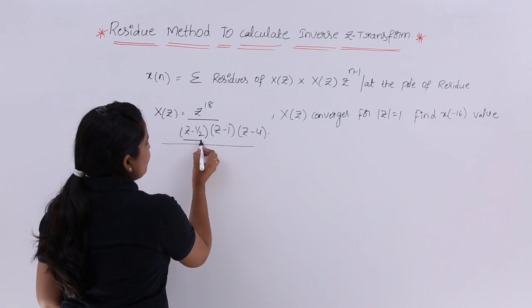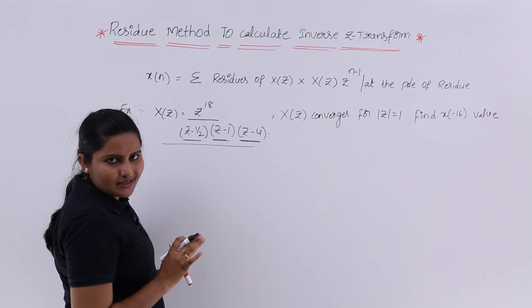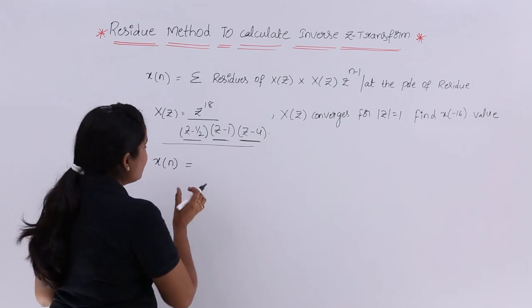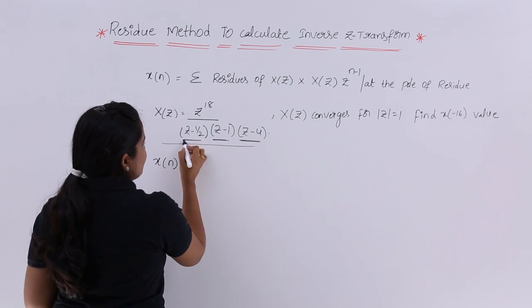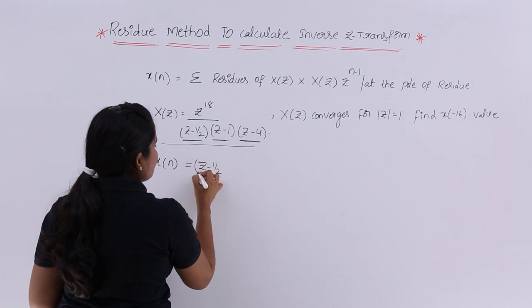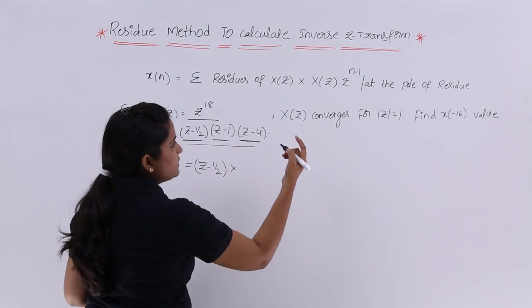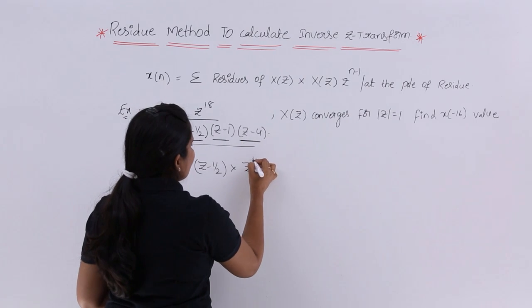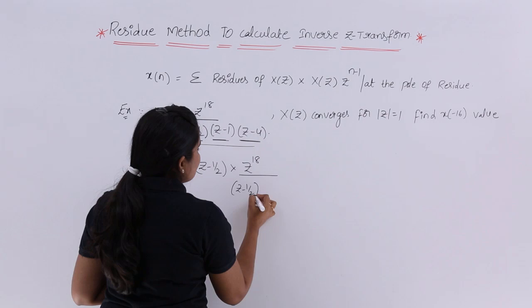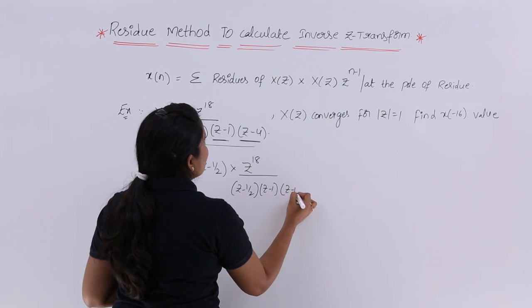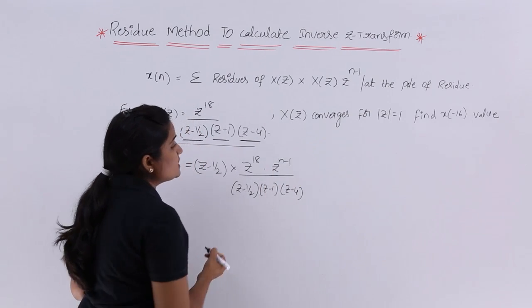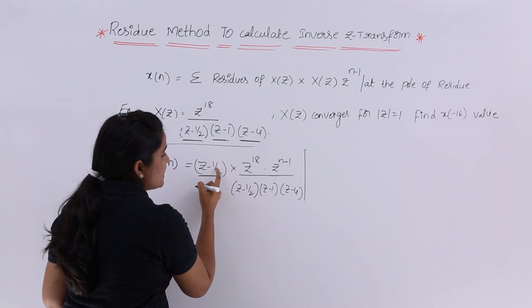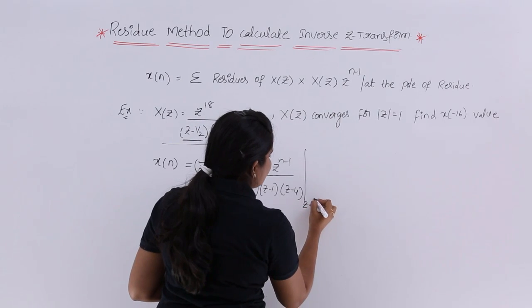Residues are nothing but whatever the denominator groups are there — those are called poles. Using the residue theorem directly to write the inverse Z transform: X(N) equals the residue of (Z - 1/2) times X(Z) into Z^(N-1), where X(Z) = Z^18 divided by (Z - 1/2)(Z - 1)(Z - 4). This is the first residue, evaluated at the pole Z = 1/2.